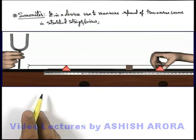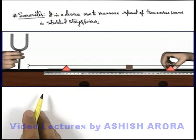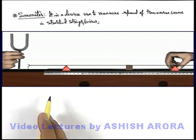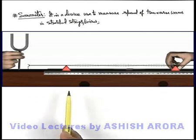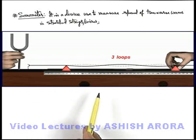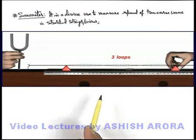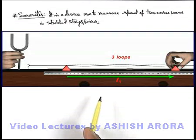Like here, if we displace the clamp C2, we keep C1 fixed. And if we displace the clamp C2, you can see at a particular position of C2, 3 loops are obtained in the string. And that means at this position, say this length is L1, which is the distance between clamp C1 and C2.